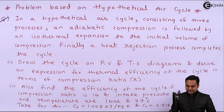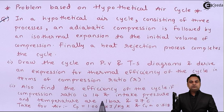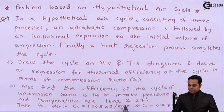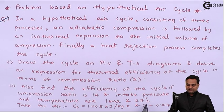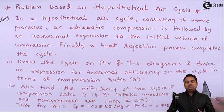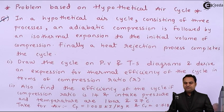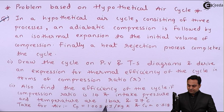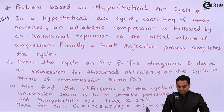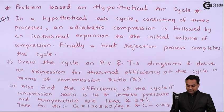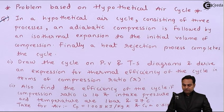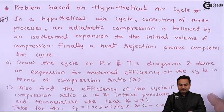We also need to find the efficiency of the cycle if the compression ratio is 14, and intake pressure and temperature are 1 bar and 27 degrees Celsius. For air, the specific heat at constant pressure Cp and constant volume Cv are also given. Let us write all this data and get started.